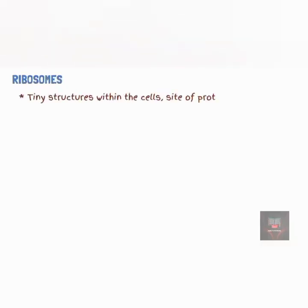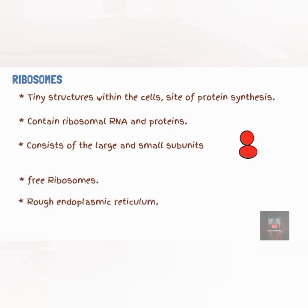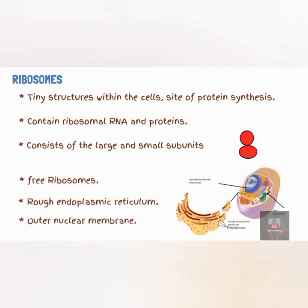Ribosomes are tiny structures within the cell that are the site of protein synthesis. They are rich in ribosomal ribonucleic acids and contain at least 50 different types of proteins. They are made up of large and small subunits. Some ribosomes exist as free ribosomes in the cytosol, while some are attached to the rough endoplasmic reticulum, and some are attached to the outer nuclear membrane. Free ribosomes synthesize cytosolic proteins, while rough endoplasmic reticulum ribosomes synthesize proteins destined for cell membranes, export, and other organelles.